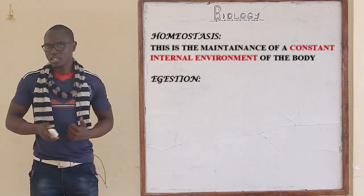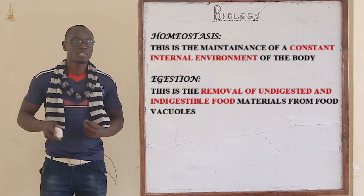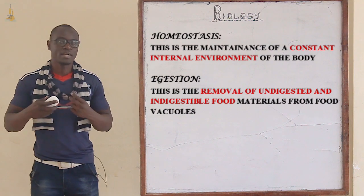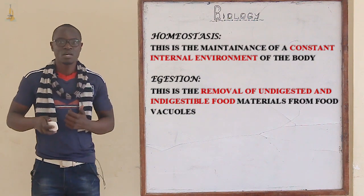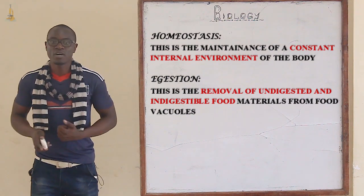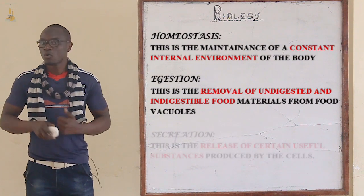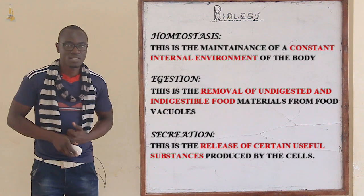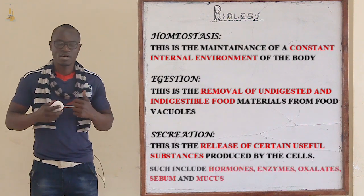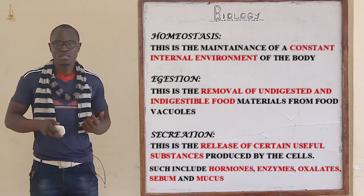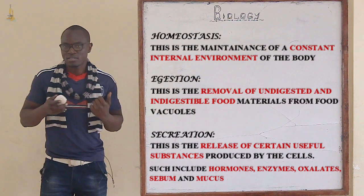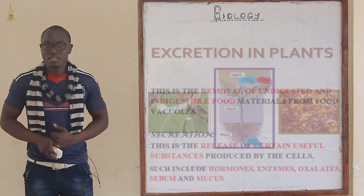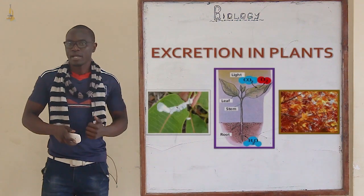Let's also define ingestion and secretion. Ingestion is basically the removal of undigested and indigestible food materials from the body or food vacuoles of the cell. Secretion is the release of useful substances produced by the cells, such as hormones, enzymes, oxytocin, sebum, and mucus.